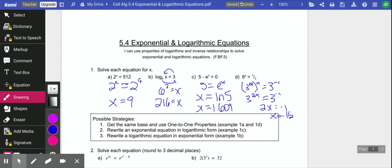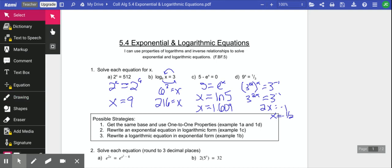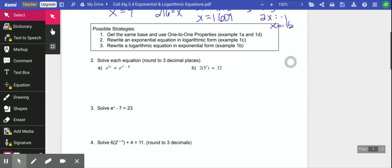But some strategies that you have: you can get the same base and use the 1 to 1 properties. That's what we did in A and D. We can rewrite an exponential equation in logarithmic form. That's what we did in C. Or we can rewrite a logarithmic equation into exponential form, which is what we did in B.